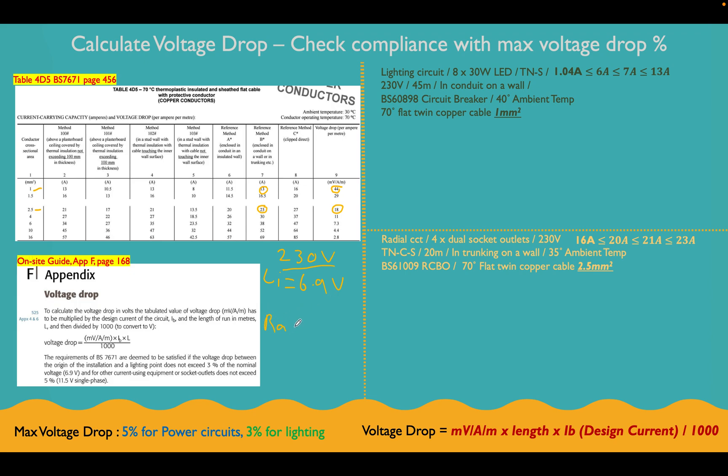And for our radial circuit, which is feeding the sockets, we can't exceed 5%, which is 11.5 volts. It's always good to write those down as voltages. It's just a little bit easier to actually see visually when you do these calculations. So we're going to calculate these, and it's going to give us a value in volts, and we're going to check that it's lower than these amounts.